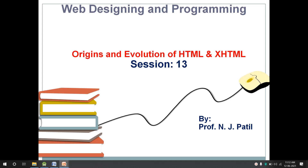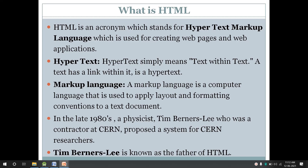XHTML is an extensible version of HTML, that is Extensible Hypertext Markup Language. We will study a brief history of HTML as well as different versions of HTML and XHTML. HTML is an acronym which stands for Hypertext Markup Language, used for creating web pages and web applications. HTML is a markup language used to create web pages.